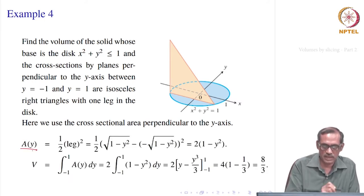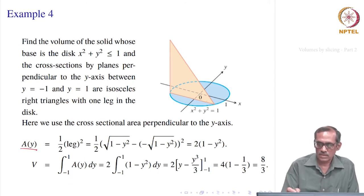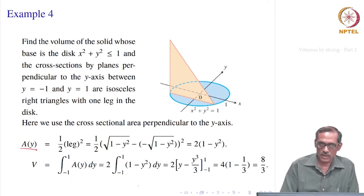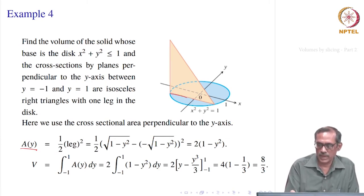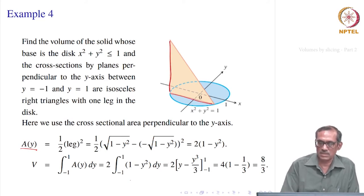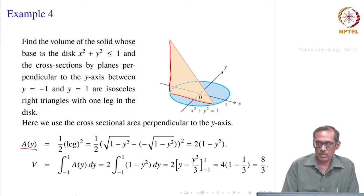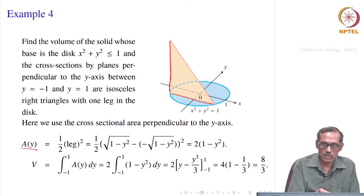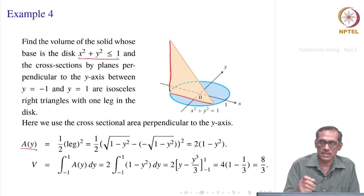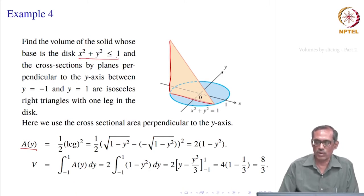So what is the cross sectional area here? Since it is a triangle, we already know it is a triangular area. All that we get is half times the base and the height, but they are the same — that is the same as the leg in the disc. So it is half times leg squared. But what is exactly the leg? The leg lies between y = −1 and y = 1 and it is inside the disc x² + y² ≤ 1.